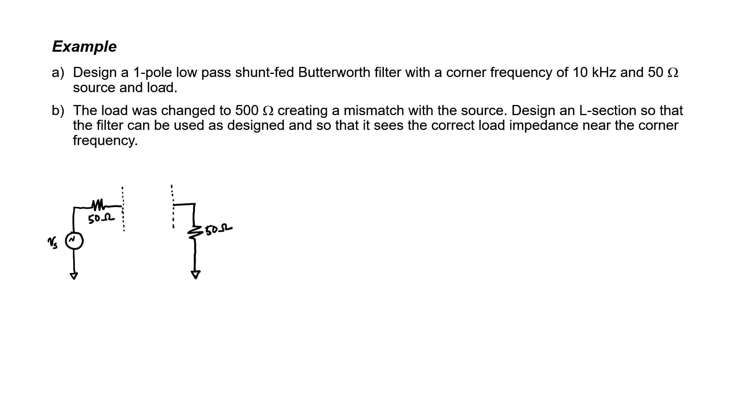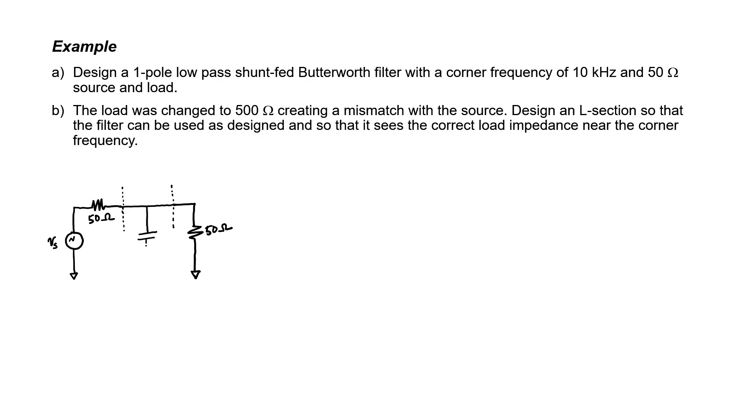We're told here that it needs to be low-pass and shunt-fed. That means that the first and only circuit element that this filter has is going to be a capacitor in the shunt position. That makes it low-pass. If it were an inductor it would have been a high-pass filter. We need to find the value of this capacitor in order to complete our design.